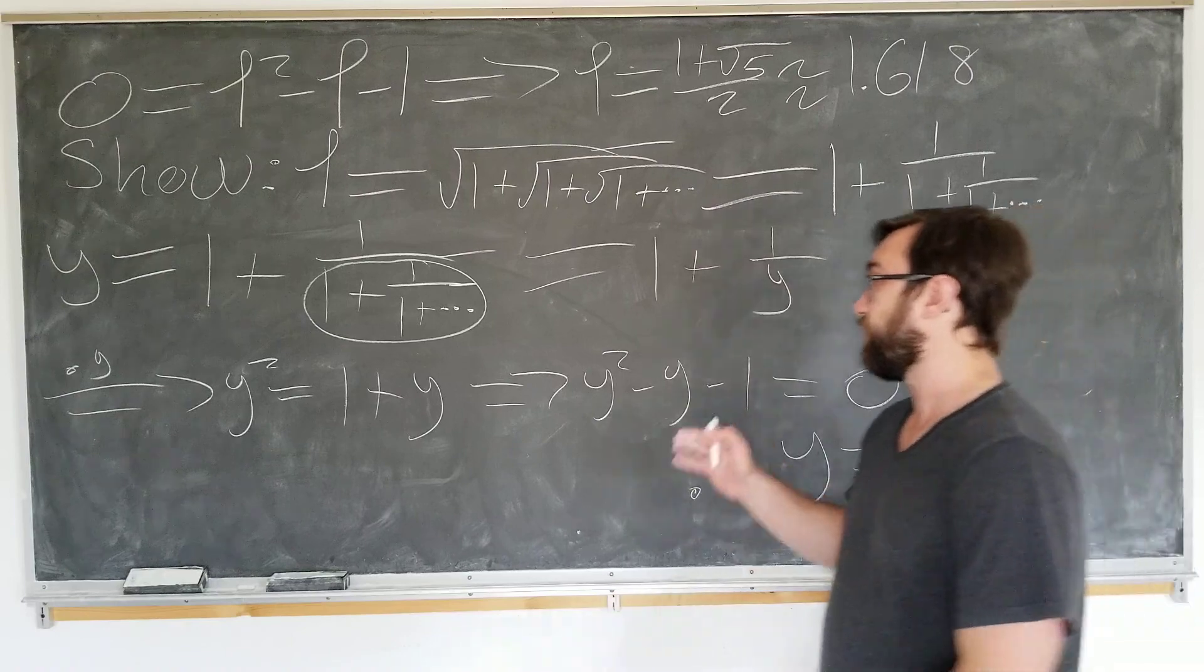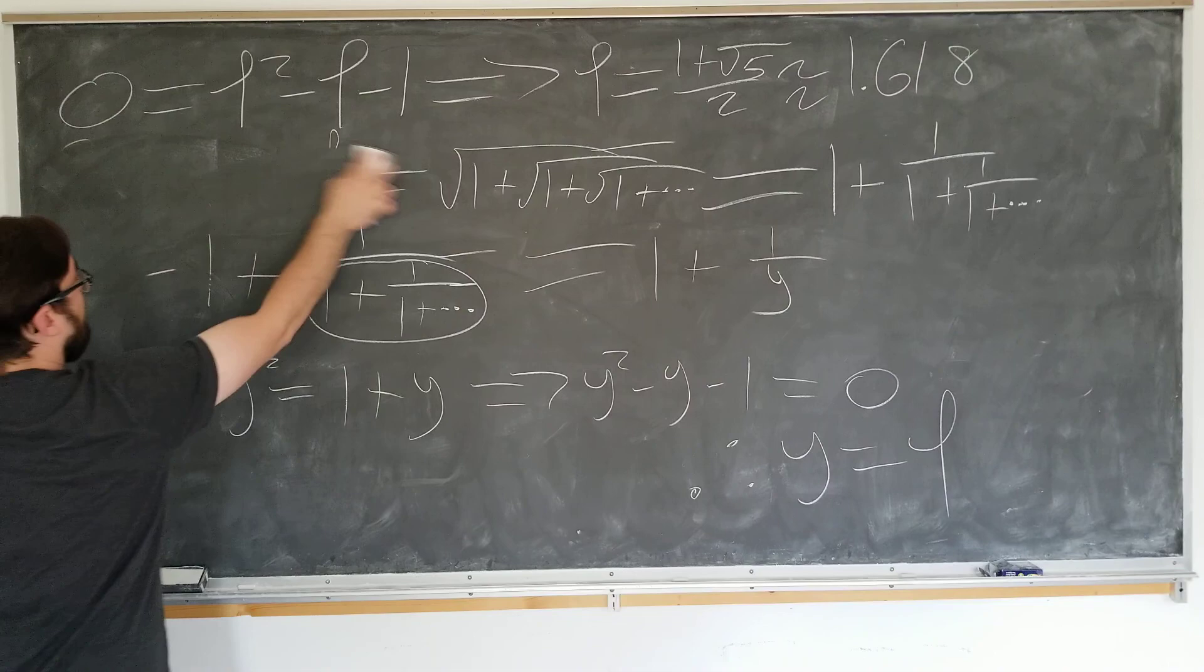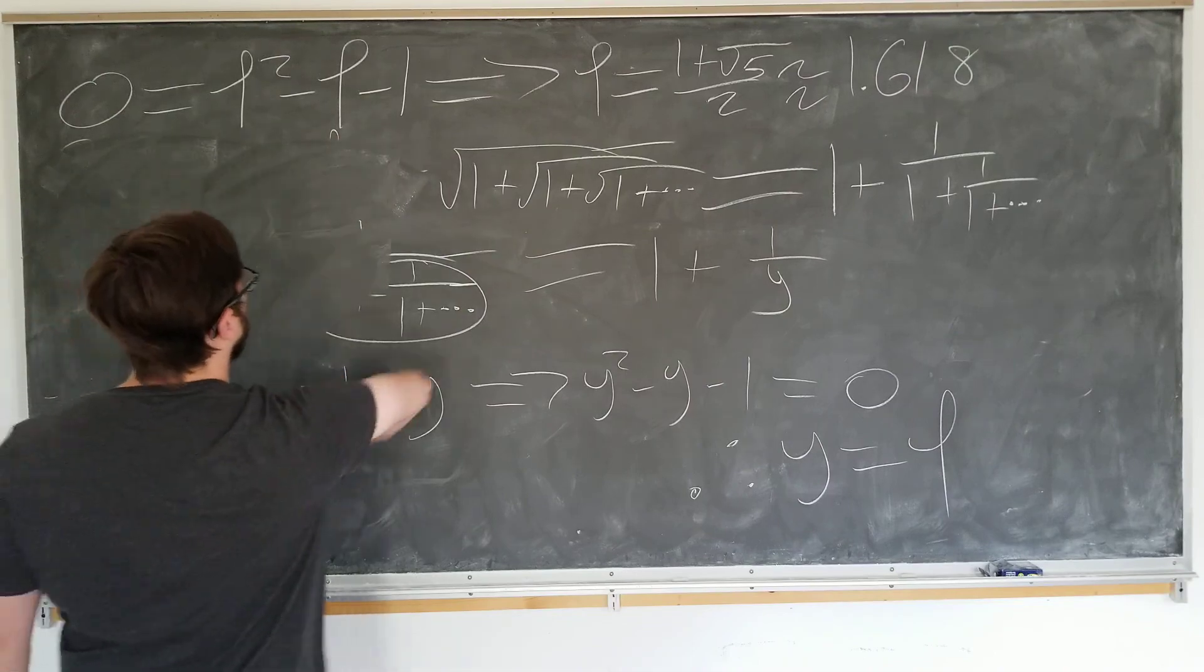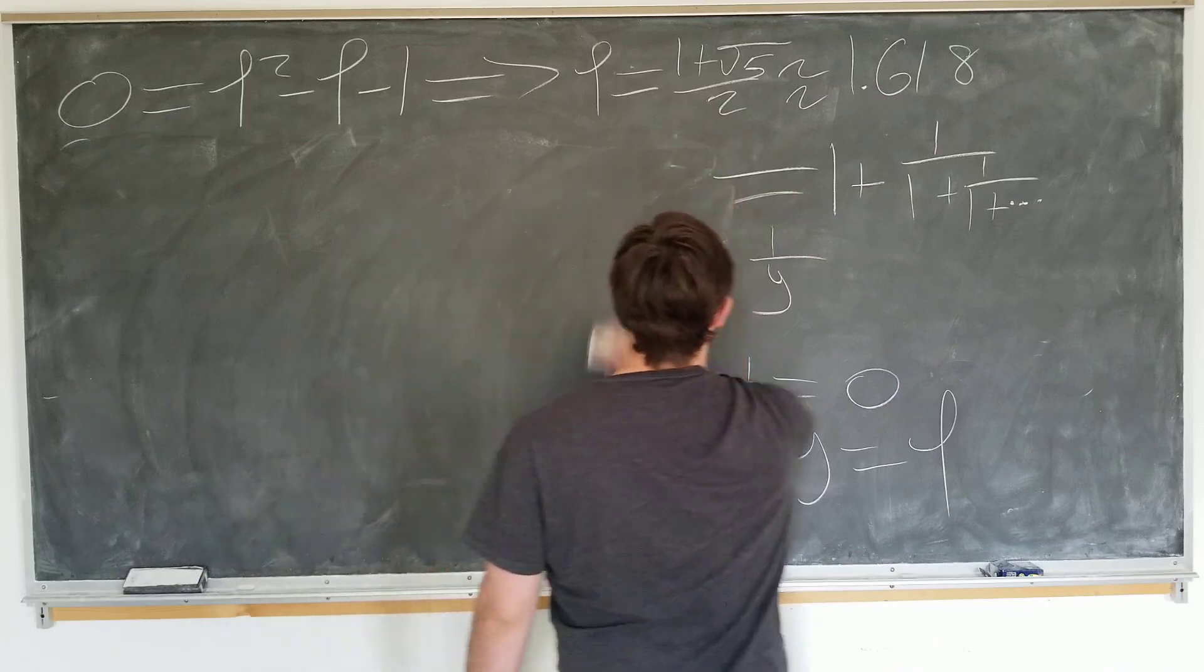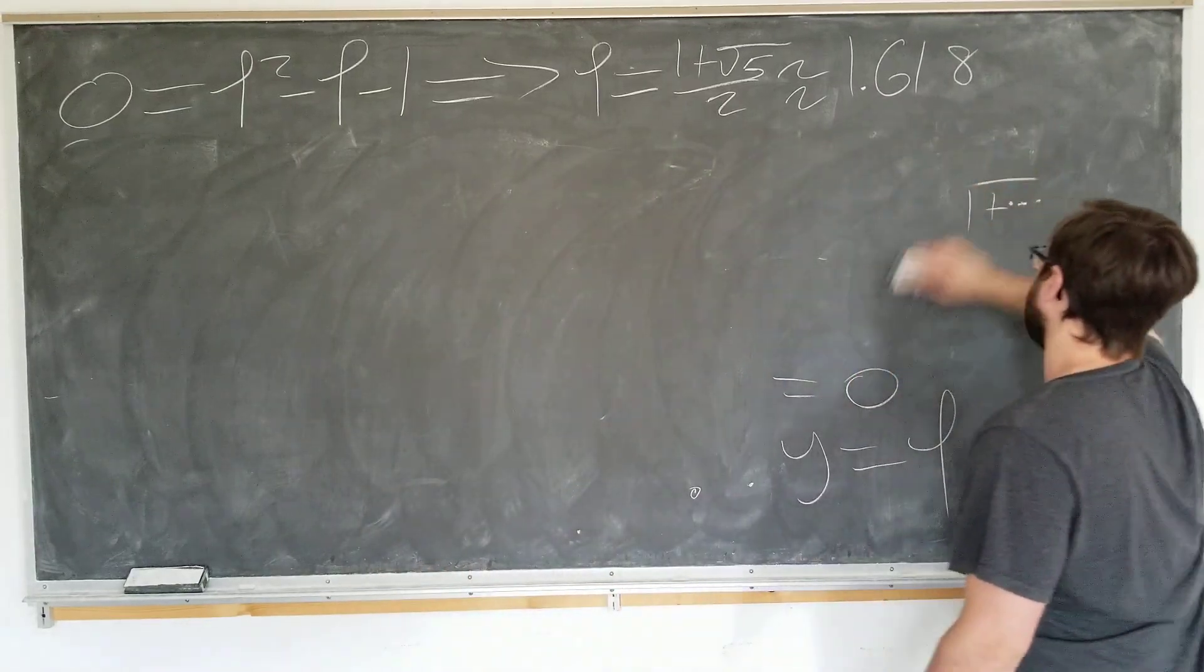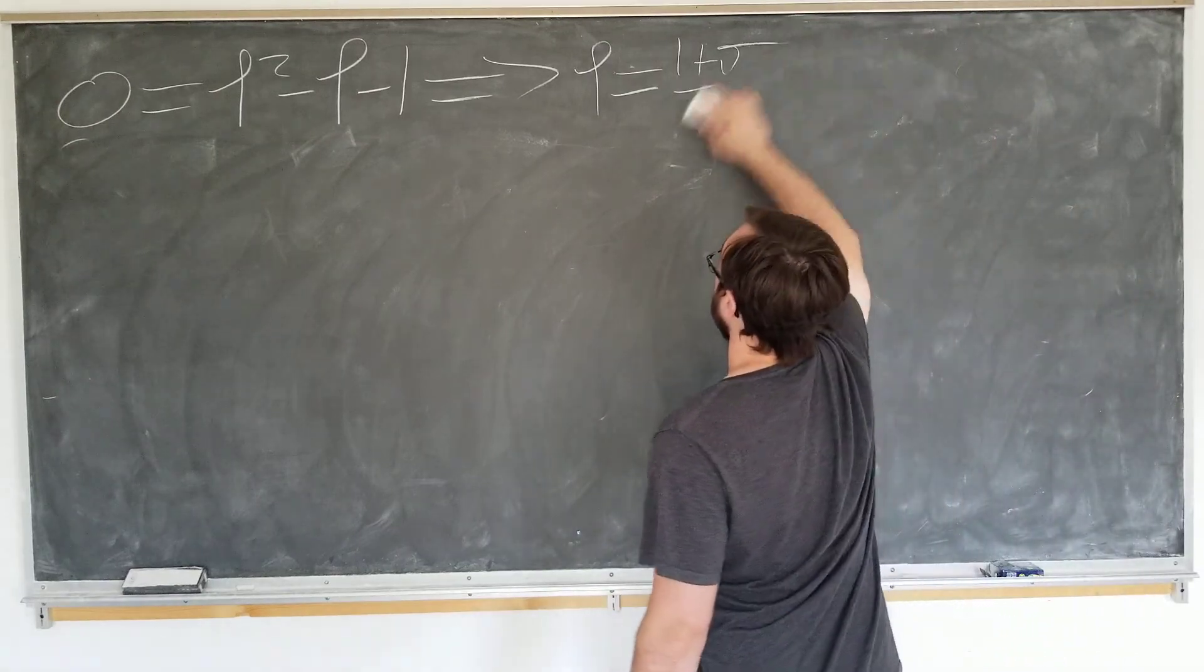We did use the same property, so I guess we could kind of see why they're the same. But, do we really know why they're the same? I want to know why these expressions should be the same. How we can see that they're the same without doing this calculation.